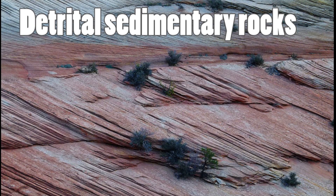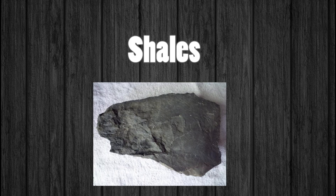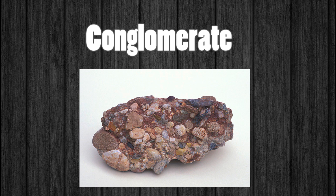Detrital rocks are formed by the accumulation of sediments that come from the erosion of rocks exposed to the surface, generated by a cycle called the sedimentary cycle. The main detrital sedimentary rocks according to grain size are: shales, which are very fine-grained rocks composed of silts and clays with a laminar structure; sandstone, with a slightly larger grain size where sediments can be distinguished with the naked eye, composed mainly of quartz with smaller amounts of feldspars and clays; and finally conglomerates, the coarsest-grained detrital rocks, characterized by large grains embedded in a matrix of much smaller sediments.